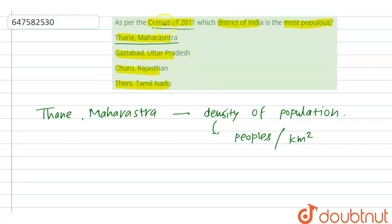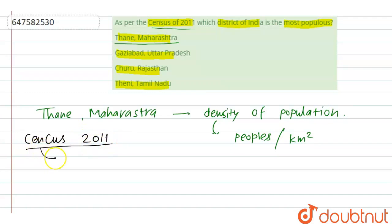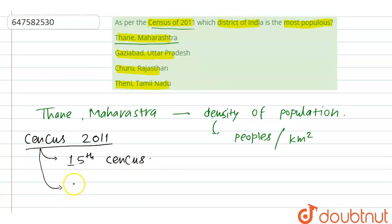Now let's see some facts about the census 2011. This is India's 15th census. The supreme authority for this census is C. Chandr Mauli.